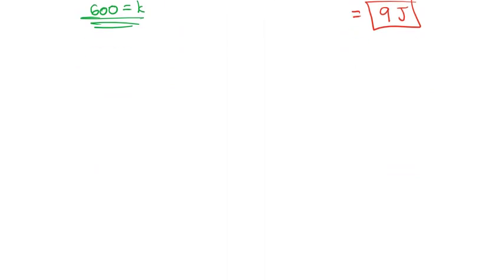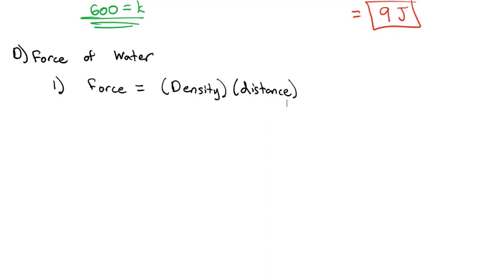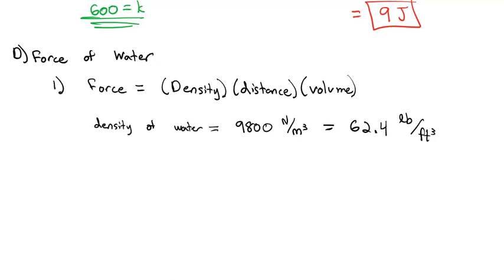Now we're ready for the real problems: talking about the force of water. In general, force can be calculated as the density of what's pushing against it times the distance it has to travel times the volume. Specifically about the force of water, the density of water is either 9,800 newtons per cubic meter or 62.4 pounds per cubic foot, depending on whether we're in metric or SI units.